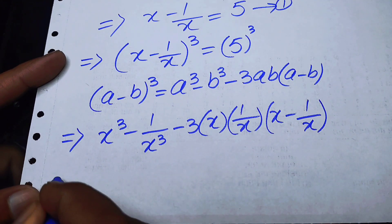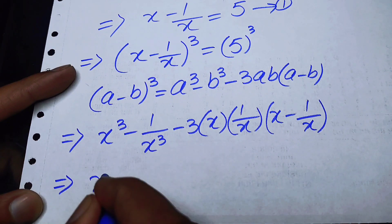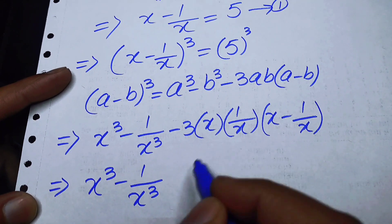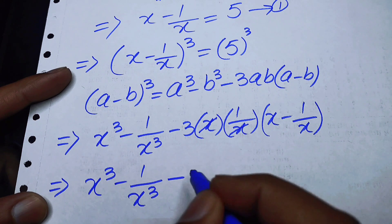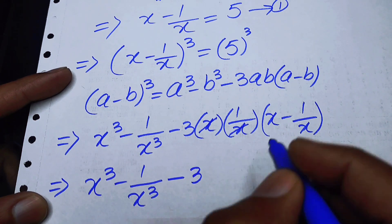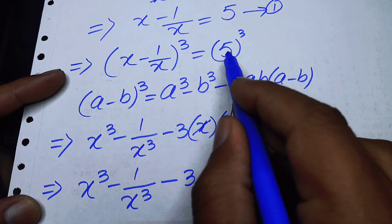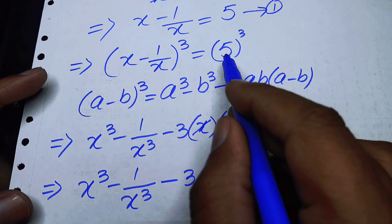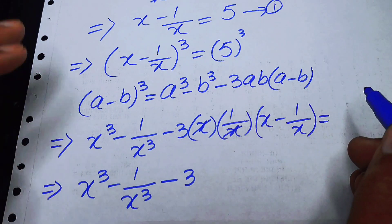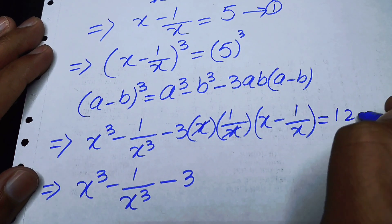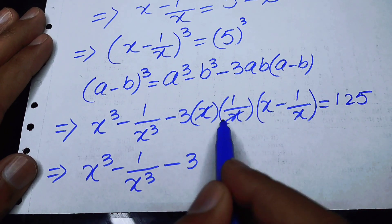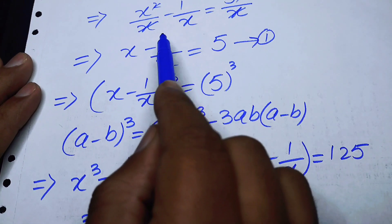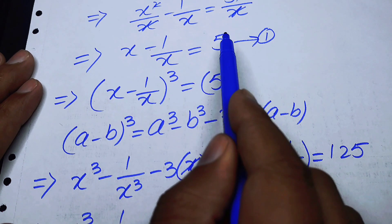After simplifying, it becomes x cube minus 1 over x cube minus 3 — since x times 1 over x gives 1 — and on the right hand side the cube of 5 is 125. So we have x cube minus 1 over x cube minus 3 times x minus 1 over x equals 125. The value of x minus 1 over x is 5 from equation 1.